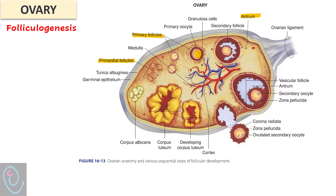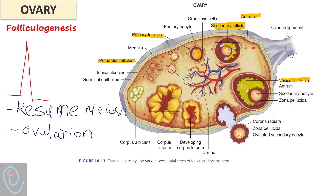Fluid accumulates between granulosa cells, forming the antrum, and the follicle becomes a secondary follicle. As the antrum grows, granulosa cells arrange into two parts: the cumulus granulosa cells surrounding the oocyte, and the mural granulosa cells. Theca cells form the outer part — now called a tertiary follicle. The increasing estradiol switches negative to positive feedback, causing an LH surge, which resumes meiosis — the primary oocyte completes meiosis I to form a secondary oocyte just before ovulation. LH surge also triggers ovulation, releasing the secondary oocyte surrounded by the zona pellucida and corona radiata.